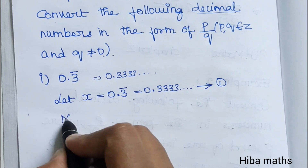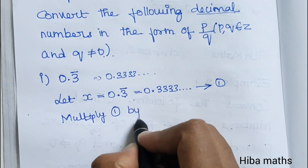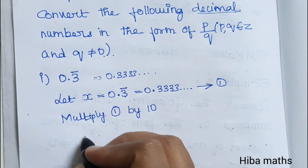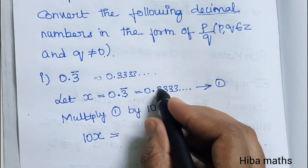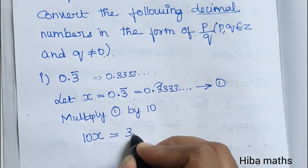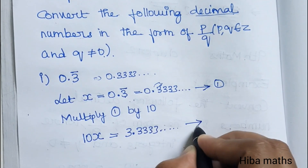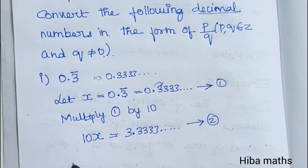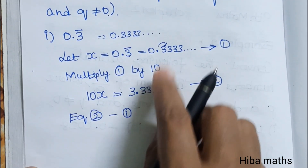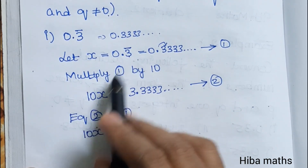So multiply equation 1 by 10. Equation 1 multiplied by 10 gives: 10x is equal to 3.33333... This is equation 2.